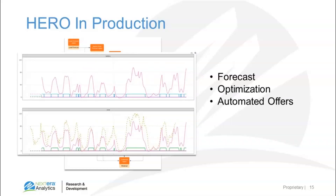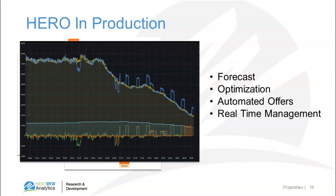Once we have our offers, we actually submit them in an automated fashion via an API with the market operator. The market operator will then clear us and dispatch us appropriately. This is an example of the wind and battery dispatching in a hybrid manner. The blue curve here is the dispatch set point going to the wind asset, whereas the orange is the actual production. You can see that when the wind is dispatched up or down from what it can actually produce, the battery is firming the asset and picking up the difference.